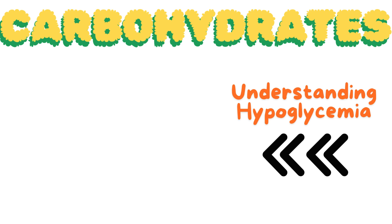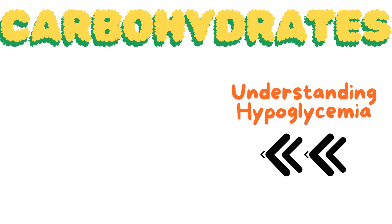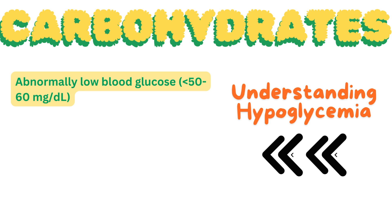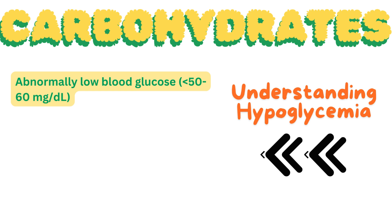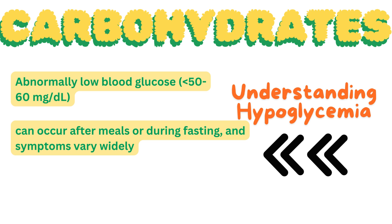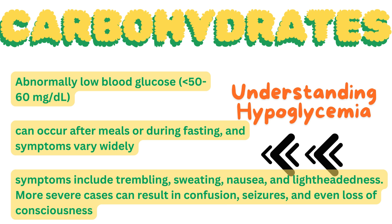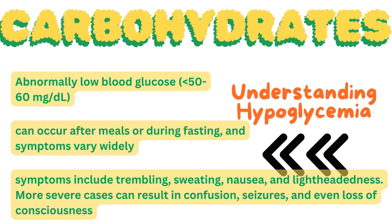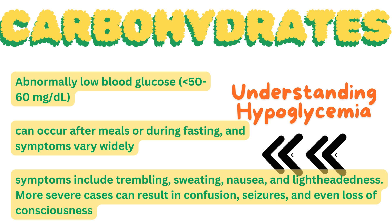Hypoglycemia refers to an abnormally low concentration of blood glucose, generally defined as below 50–60 mg per deciliter. Hypoglycemia can occur after meals or during fasting, and symptoms vary widely. Common symptoms include trembling, sweating, nausea, and lightheadedness. More severe cases can result in confusion, seizures, and even loss of consciousness.